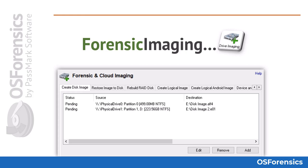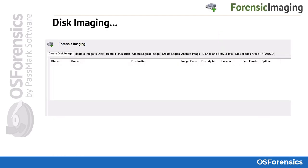The forensic imaging module allows the investigator to create and restore disk image files, which are bit-by-bit copies of a partition, physical disk, or volume. Disk imaging is essential in securing an exact duplicate of a storage device so it can be used for forensic analysis without risking the integrity of the original data. The forensic imaging module in OS Forensics has seven tabs, each with a specific task.